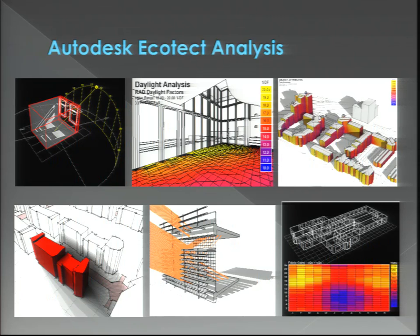There are some figures showing what data analysis can be generated from Ecotect. These include the effect of the sun, daylight analysis, solar radiation effects on urban areas, sun rays, overshadowing, and thermal analysis inside buildings.